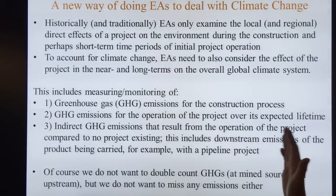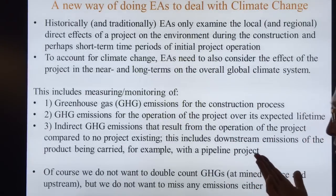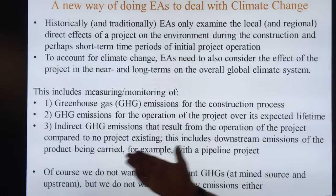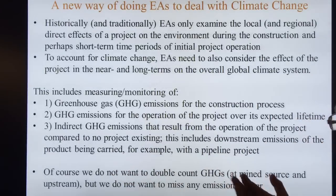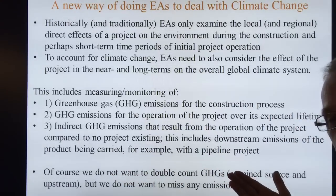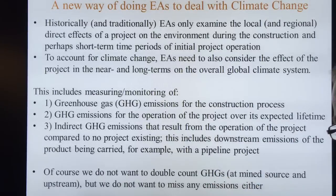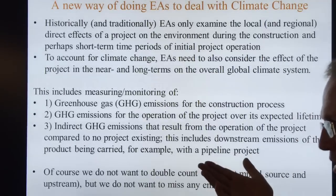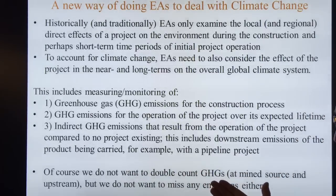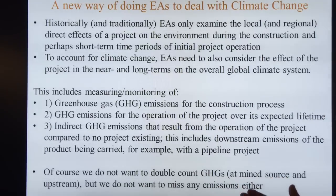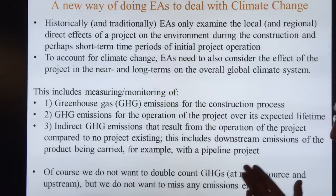For example, during the operation of the project compared to no project existing — for example, downstream emissions of the product being carried, like with a pipeline project. If the oil would not be flowing without that pipeline to the market, then the oil coming out the end of the pipeline is burned, combusted, producing greenhouse gases. Those need to be considered if they're new emissions, if this project expands on it. Of course, we don't want to double count greenhouse gases, so if we consider them at the mine source, that will help us not miss any emissions. This is very important to do.